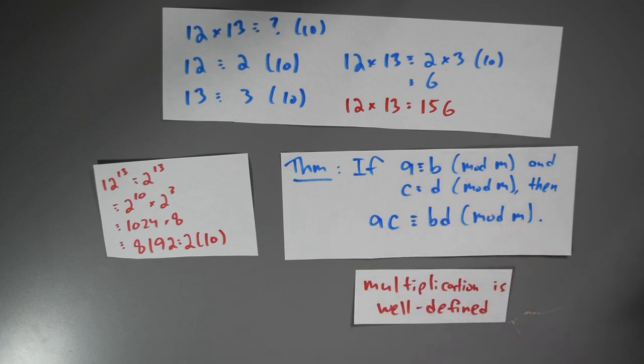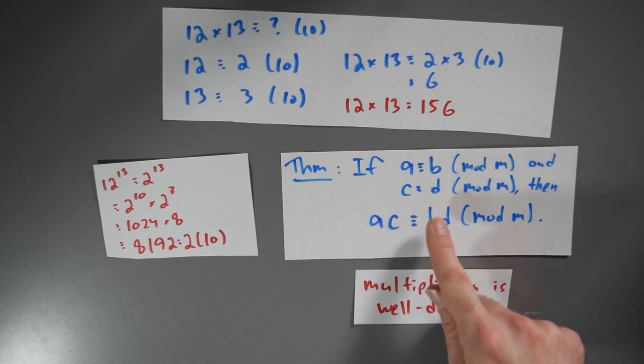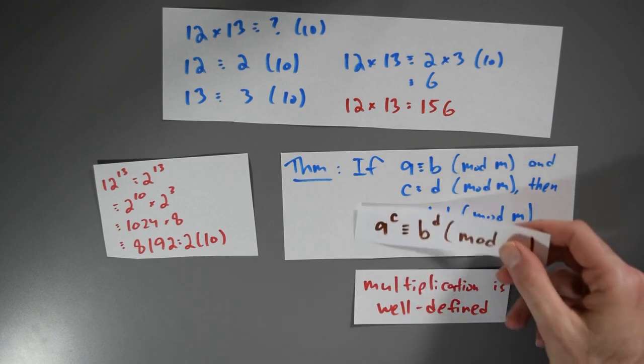So what about exponentiation? Well, if we wanted to try to write down a theorem that's asserting exponentiation is well defined, it would start out the same way. a is congruent to b mod m, c is congruent to d mod m. But the conclusion would look like this.